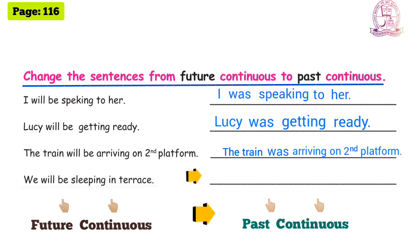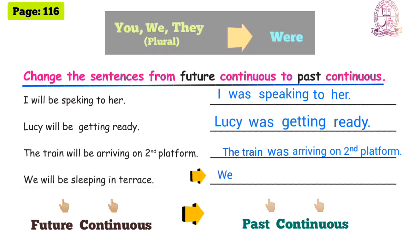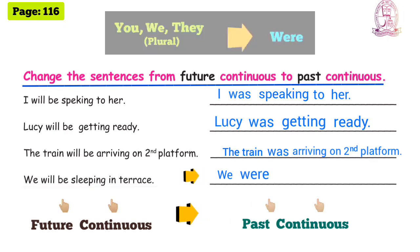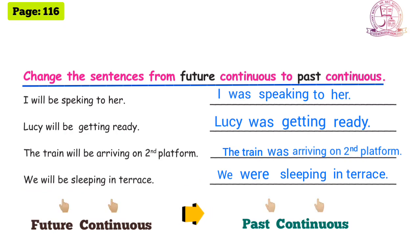Next sentence: 'We will be sleeping in terrace.' Convert to past continuous tense. Subject: 'we' — plural. For 'you', 'we', 'they' — plural subjects — auxiliary verb 'were' is used. So: 'We were sleeping in terrace' — past continuous tense.